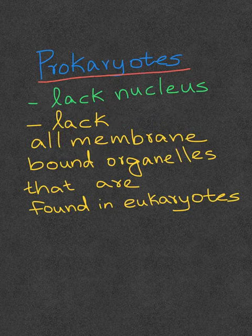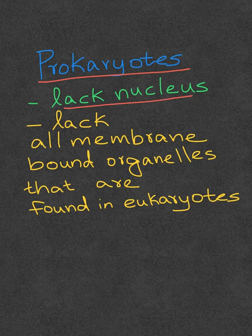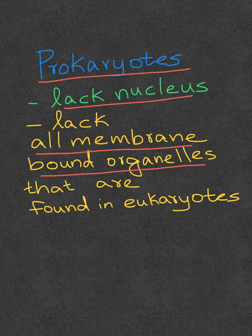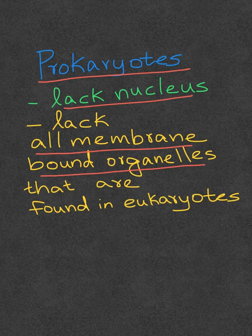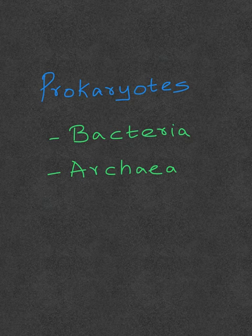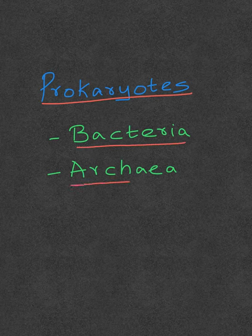Prokaryotes, in addition to lacking a nucleus, are also devoid of all membrane-bound organelles such as mitochondria, endoplasmic reticulum, Golgi apparatus, etc. that are present in eukaryotes. The prokaryotic organisms are the bacteria and archaea.